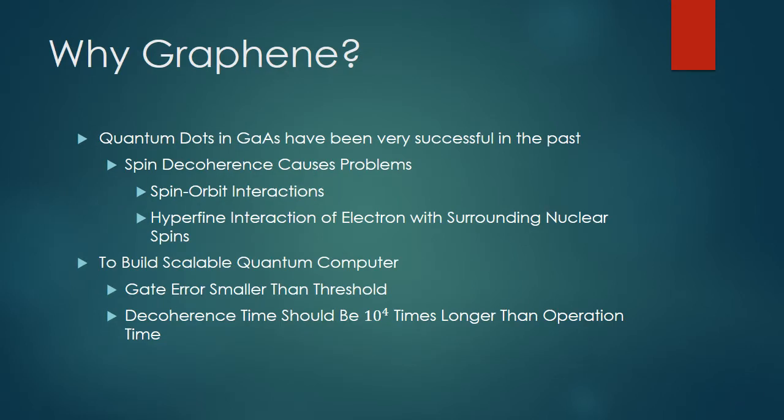So why do we want to use graphene rather than something like gallium arsenide? Quantum dots of gallium arsenide have been very successful in the past. However, despite all the advancements, gallium arsenide quantum dots still suffer from short coherence times, as a result of spin-orbit interactions and hyperfine interactions of the electron with surrounding nuclear spins. To build a scalable quantum computer, gate error should be minimized, and decoherence times should be at least 10 to the 4 times longer than the average operation time. In gallium arsenide, the large interactions with the nuclear environment cause too short of decoherence times compared to execution time for single qubit operations.